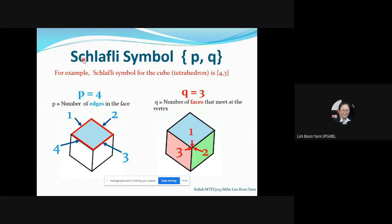So the Schläfli symbol for the cube or also known as the tetrahedron is {4,3}. So I hope with this it is now clearer for you and you're able to complete the task. All right, that's all, thank you.